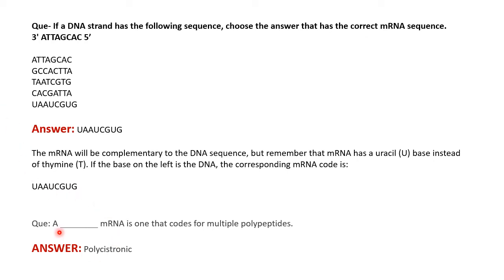The next is a fill-in-the-blank: a blank mRNA is one that codes for multiple polypeptides. The answer is polycistronic — a polycistronic mRNA is one which can code for multiple polypeptides.